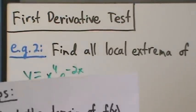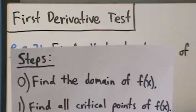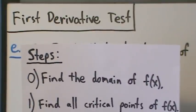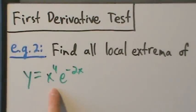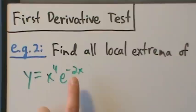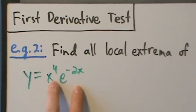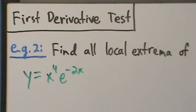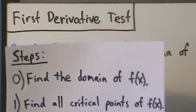We want to find the domain first because by definition a critical point has to be in the domain of the original function. If you find a place where the derivative is zero or undefined but that point is not in the domain, then it's not a critical point. For this function, x to the fourth accepts any real number, and e to the negative 2x accepts any real number, so the domain is all real numbers — nothing to worry about.